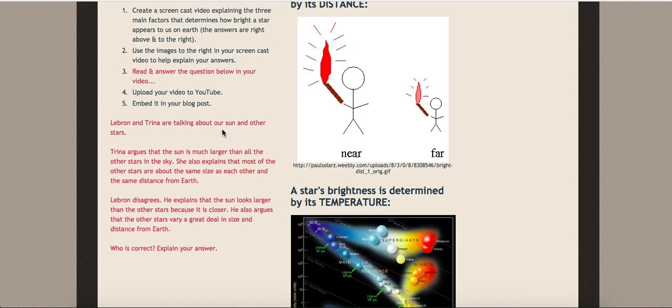LeBron disagrees. He explains that the sun looks larger than the other stars because it is closer. He also argues that the other stars vary a great deal in size and distance from Earth. So who is correct? Explain your answer.